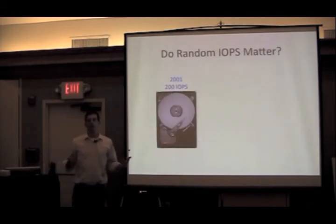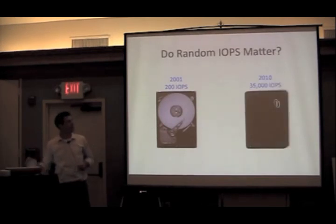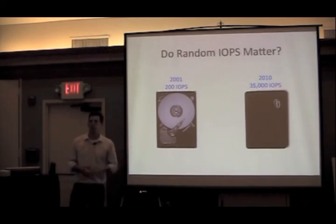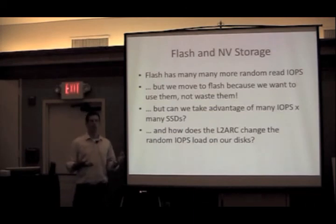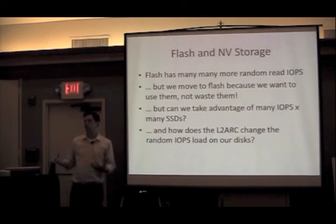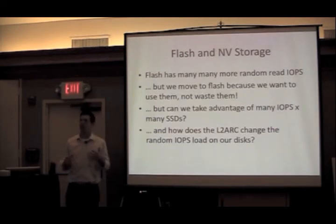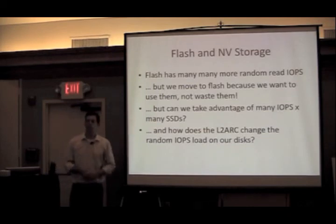Do random IOPS actually matter? Back in 2001 when Jeff and Matt started ZFS, the plan was to work with disks doing about 200 random IOPS. Now we have SSDs — this Intel one quotes 35,000 random read IOPS, and many vendors offer similar numbers. So one could argue: just throw flash SSDs at RAID-Z and problem solved. But the reason we moved to flash was to get many more random read IOPS, so I'm reluctant to just flush those away on a specialized RAID configuration.